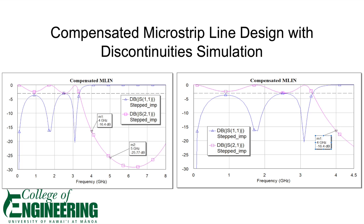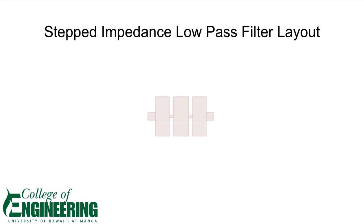After compensating for the discontinuities, the defined ripple in the passband came back, but the cutoff frequency still remained at around 3.3 gigahertz. Here's a look at the stepped impedance low-pass filter layout that was made on microwave office. We exported this layout and began the fabrication process. Jordan will now explain how we built the filter.